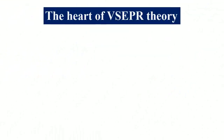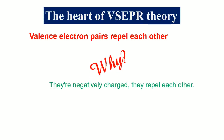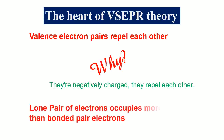Now there are two points of this theory that are known as the heart of the VSEPR theory. The first one is: valence electron pairs repel each other. Why? Because these electrons are negatively charged, so that's why they repel each other. And the second main point of this theory is: lone pair of electrons occupies more space than bonded pair electrons.